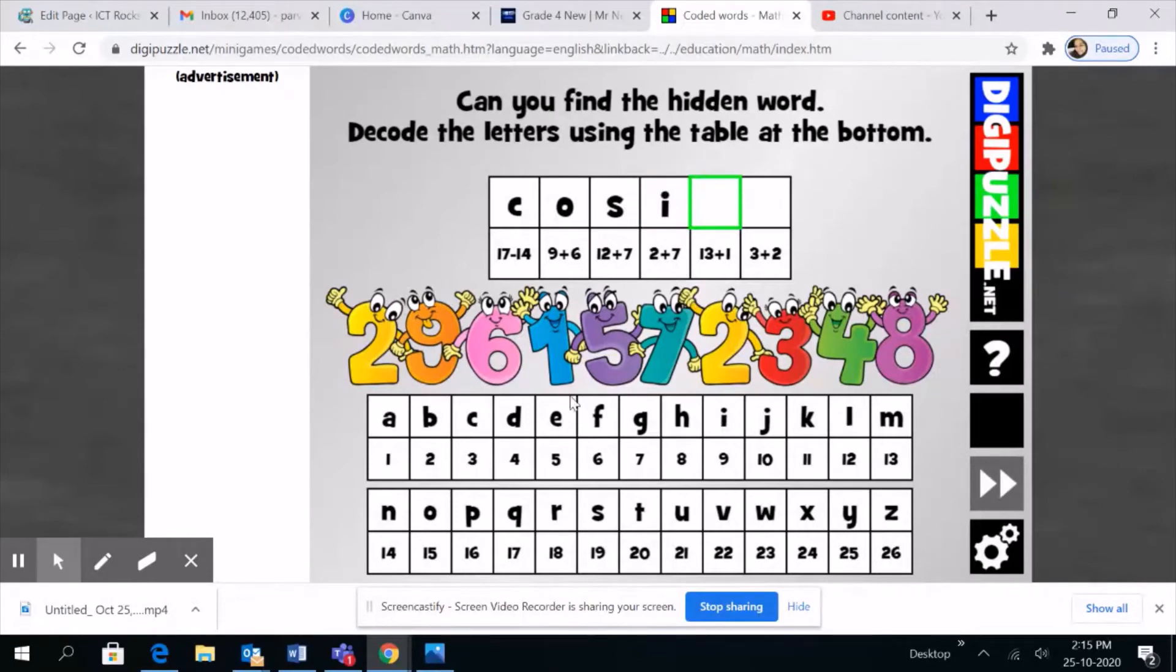13 plus 1 is 14, and that corresponds to the letter N. 13 plus 2 is 5, and that corresponds to E. Right, so we found the hidden word.